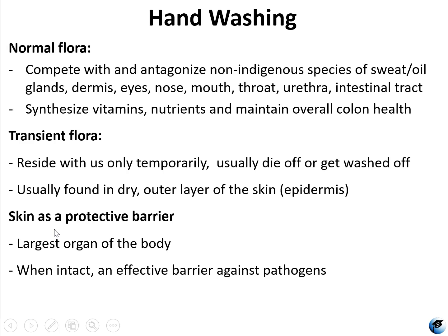They live in your sweat and oil glands, your dermis, your eyes, your nose, your mouth, your throat, even your urethra and intestinal tract. Normal flora are essential for your intestinal health — you cannot live without them. You need them for digestion and production of some vitamins like vitamin K and B12. Some normal flora can also produce their own antibiotics, which kill non-indigenous and pathogenic species.